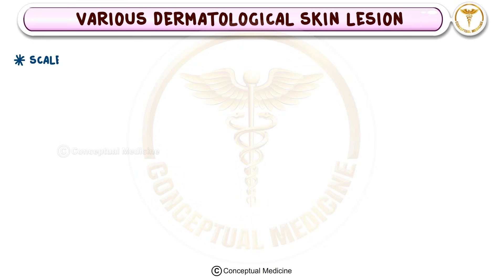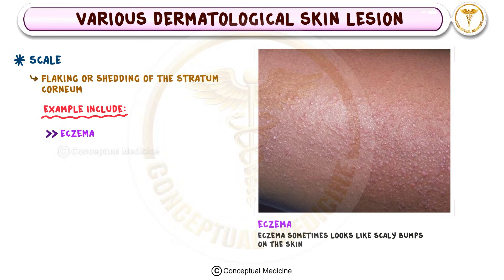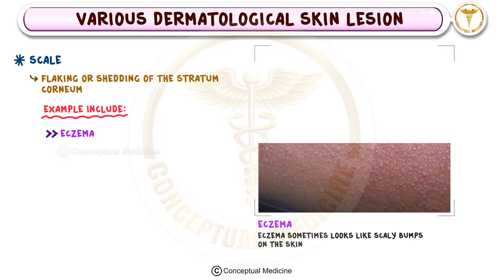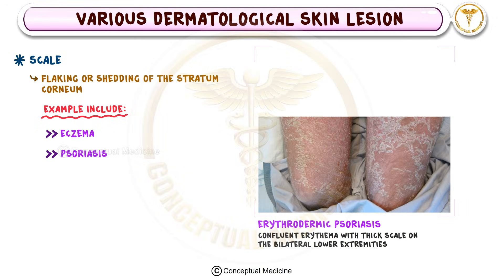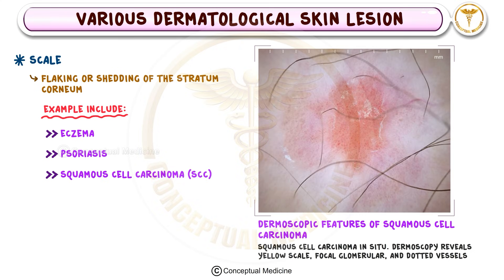Now let's discuss the scale, which refers to the flaking or shedding of the stratum corneum, the outermost layer of the skin. Scales are a hallmark of conditions like eczema and psoriasis, and can also occur in squamous cell carcinoma, where thick, scaly lesions may develop.